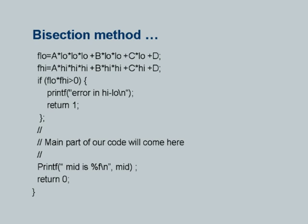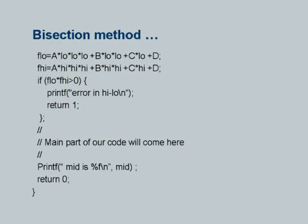Here is the program. It reads a, b, c, d, then tolerance, and then the low and high values. It calculates the function value at low: a times low³ plus b times low² plus c times low plus d, and the function value at high. Then it checks whether the sign of these two is greater than 0 — if so, the initial estimates are wrong and the program terminates. If not, the main part of the code runs — through the bisection method it will reach close to the root, and mid — which keeps getting improved through the iterative process — will be printed as the result.